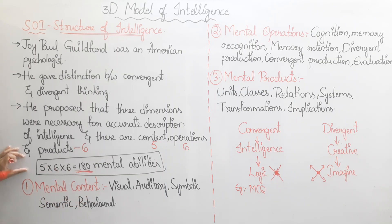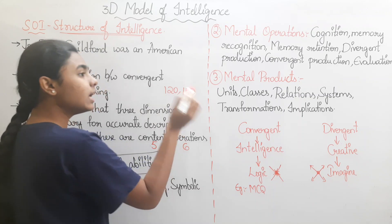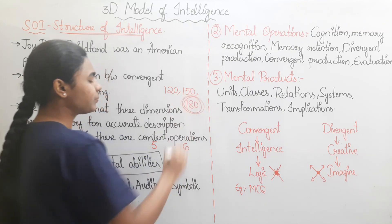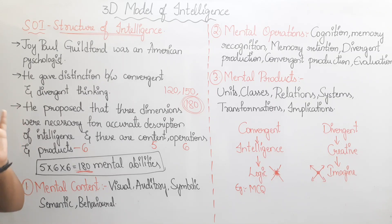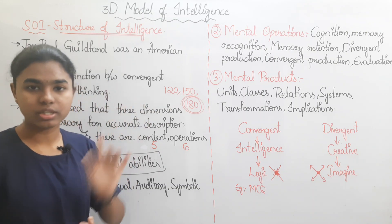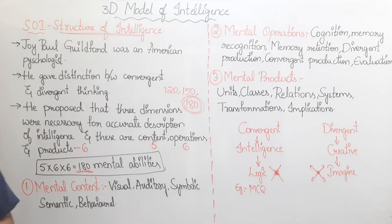Note: Guilford initially proposed 120 mental abilities, then revised it to 150, and finally to 180 mental abilities. If a question asks for the total number of mental abilities in Guilford's model, the answer is 180.